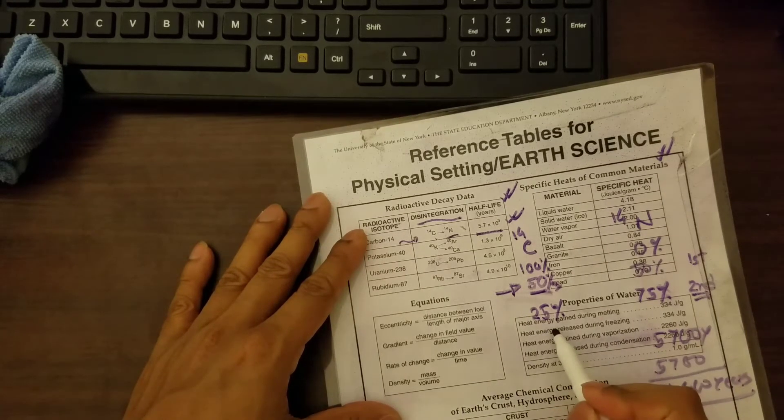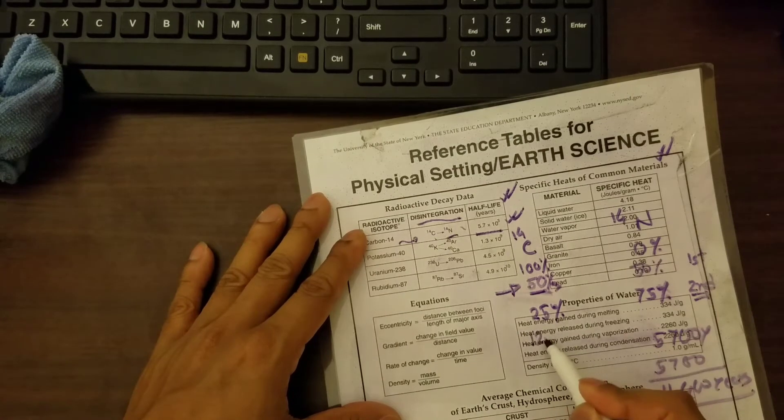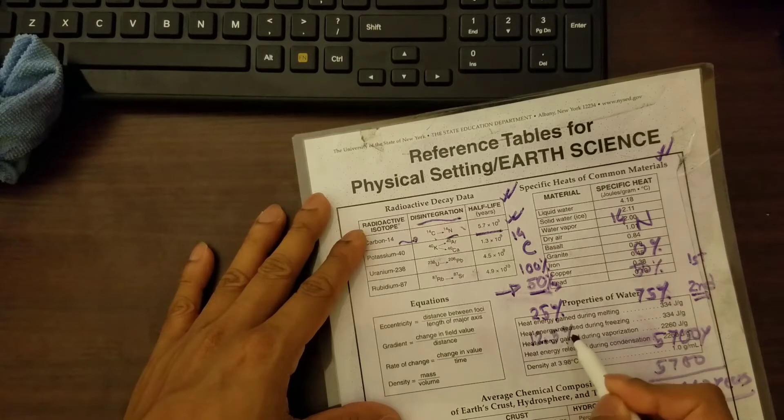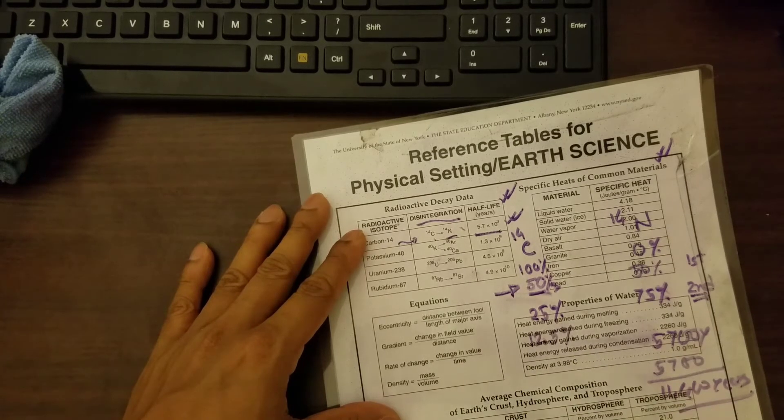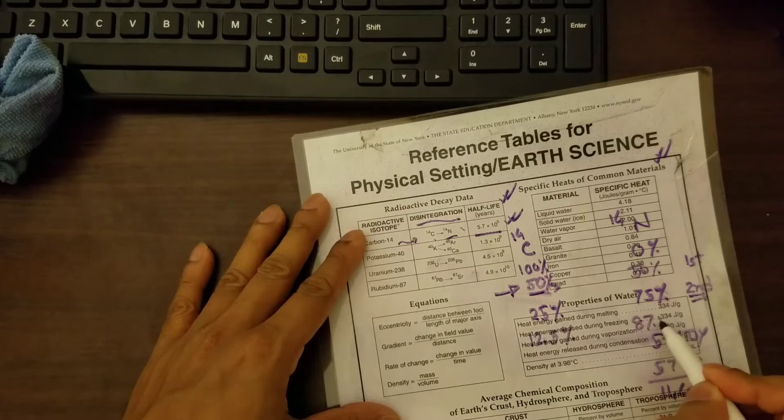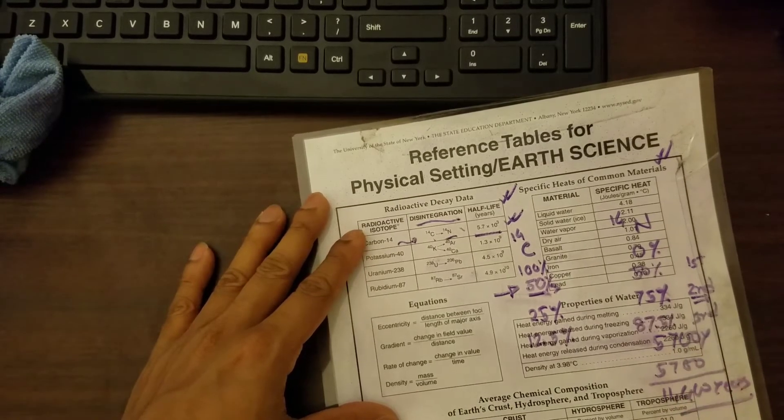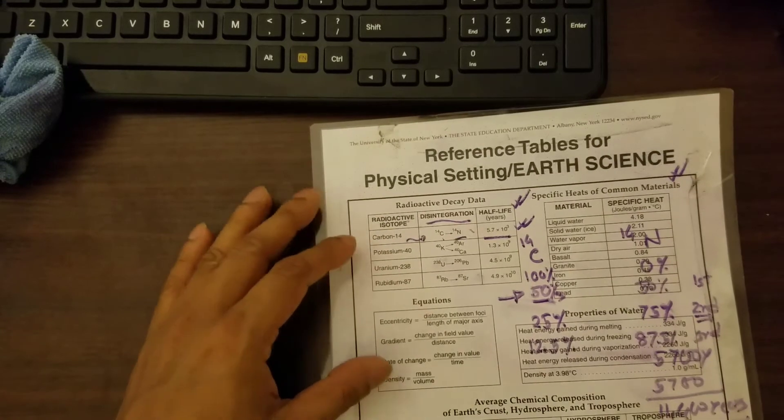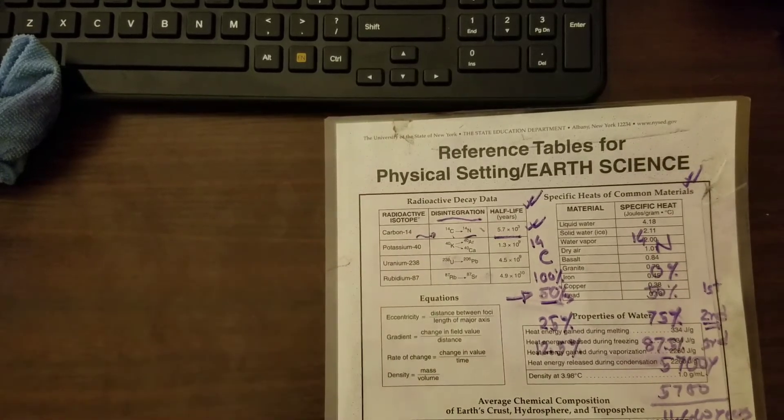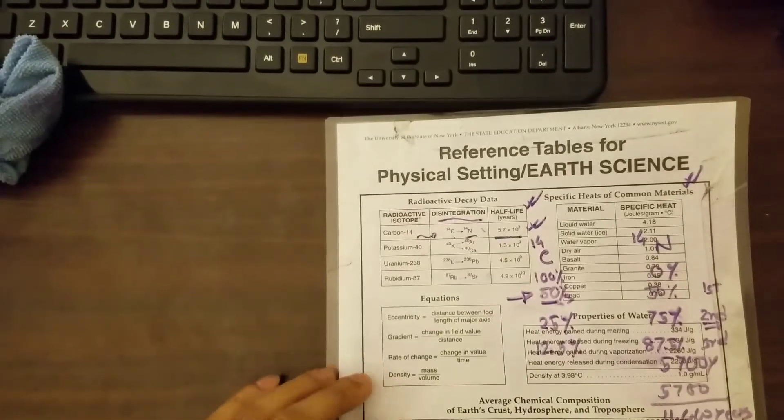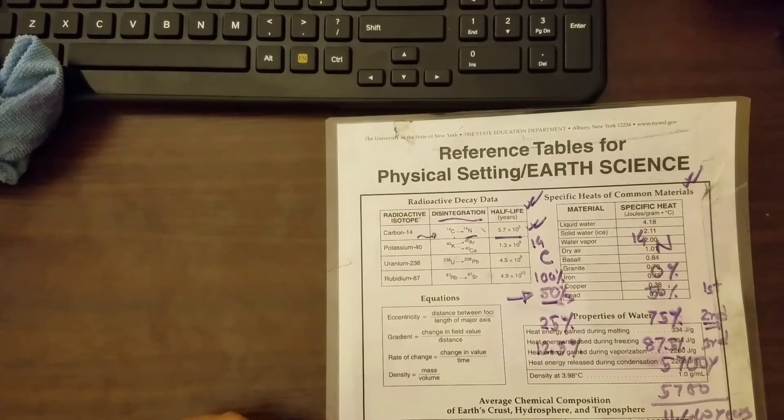That means if you're considering another half-life, this will be 12.5%, and this will become 87.5% after the third half-life, and so on. So I hope that this makes sense to you.